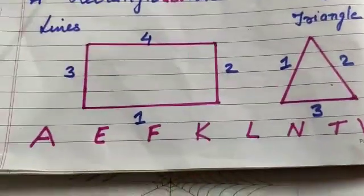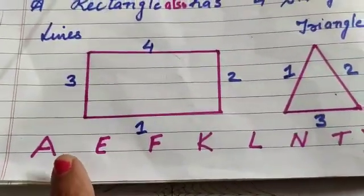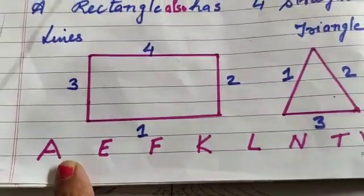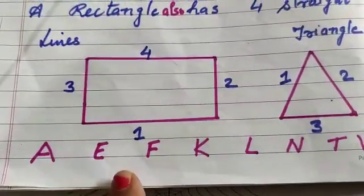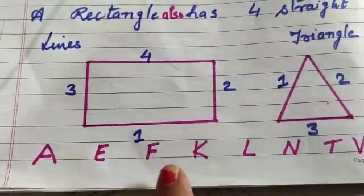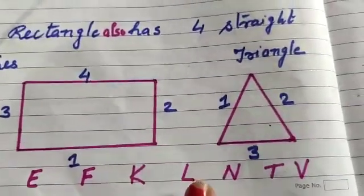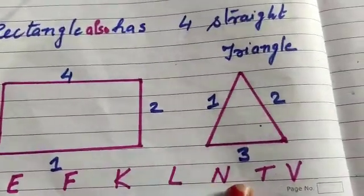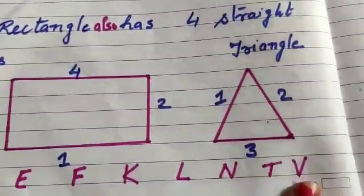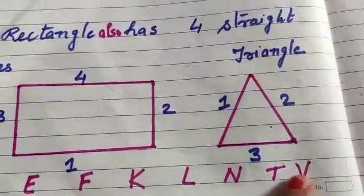Some of the alphabets with straight lines: A for apple, E, F, K, L, N, T, V.